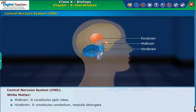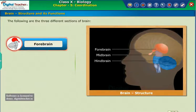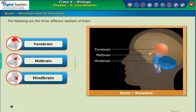Let us learn about the functions of these three sections of the brain in detail. The three different sections of the brain are: Forebrain, Midbrain, and Hindbrain.